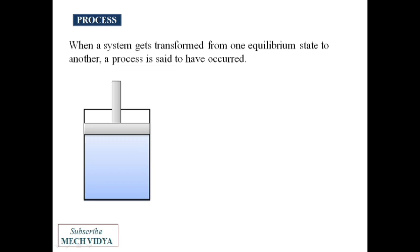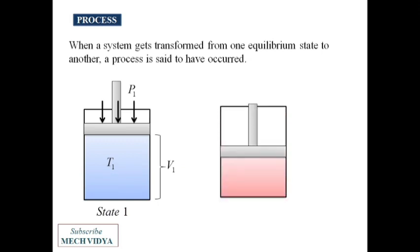Suppose we have a piston-cylinder arrangement. Now the system is at a particular state. At this state it has a definite set of property values such as pressure and volume—this is state one. Now suppose the system gets compressed. Its volume will decrease and the pressure will increase, thus the system will achieve a new state.